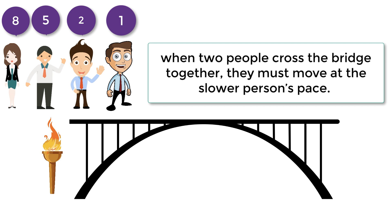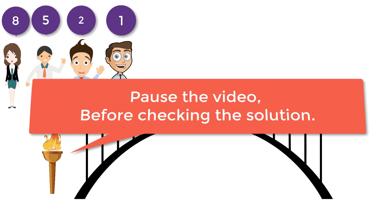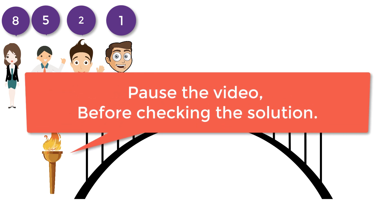When two people cross the bridge together, they must move at the slower person's pace. The question here is: what is the shortest time needed for all four of them to cross the bridge? Feel free to pause the video and try yourself before checking the solution.